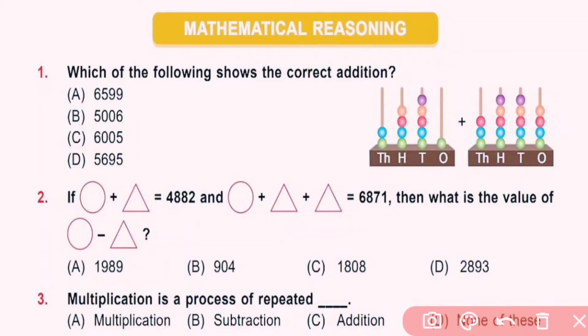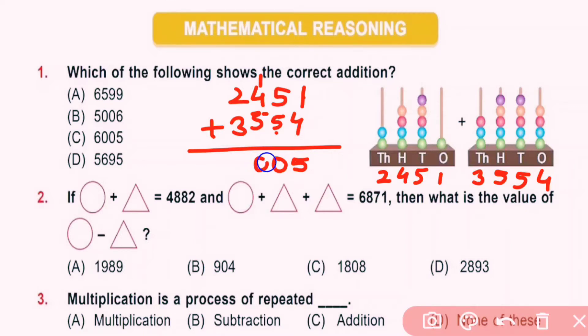Question number one: Which of the following shows the correct addition? In thousands place showing 2, hundreds place 4, tens place 5, and ones place 1. And here there are 3 in thousands place, in hundreds 5, tens 5, and ones 4. So addition of 2451 plus 3554. Here 1 plus 4 is 5, 5 plus 5 is 10 and 1 carry over. 4 plus 1 is 5, 5 plus 5 is 10, again 1 carry over. 1 plus 2 is 3, 3 plus 3 is 6. So here 6005 is the correct addition, so C is correct answer.